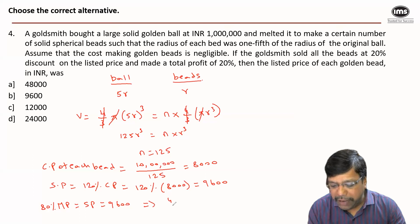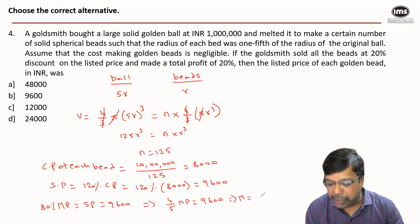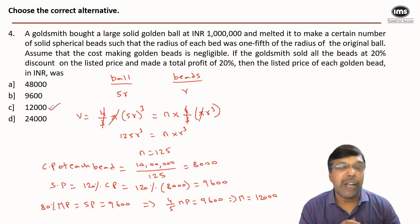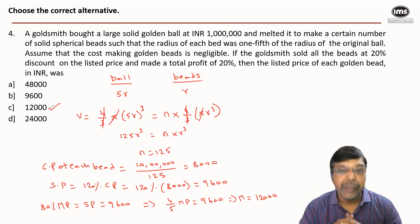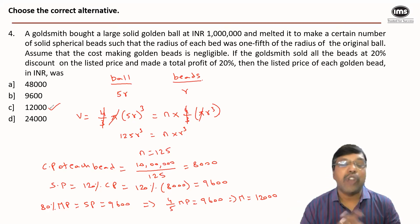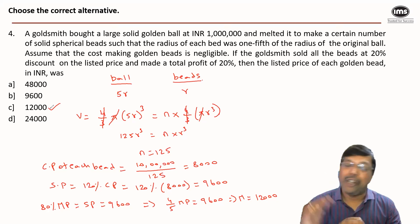So (4/5) of the market price equals 9600, which gives us the market price as 12,000. Hence, answer option C. The problem takes a bit of time, but once you solve it you realize it's not as difficult as it first appears — it all depends on how well you understand the concepts, separate them clearly, and apply them one after the other.